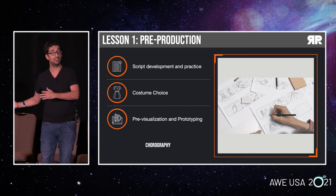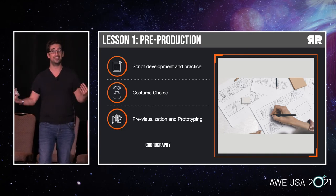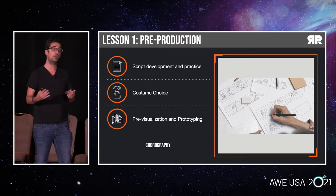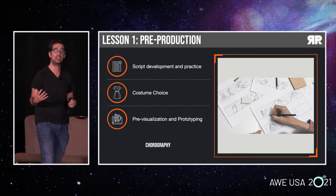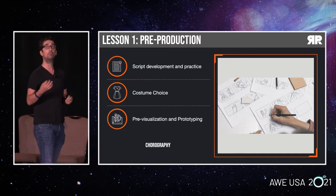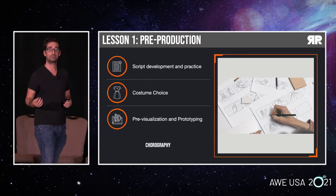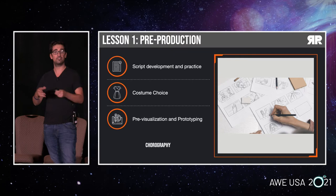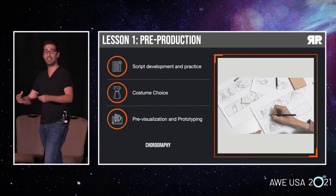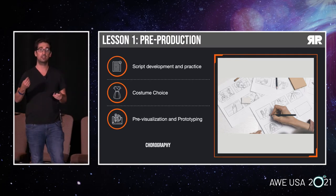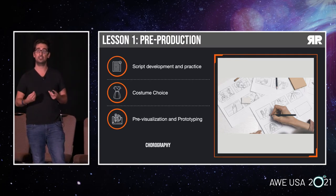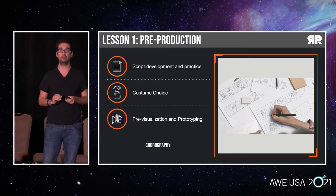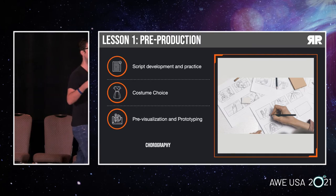If you're using a green screen, obviously you shouldn't have anything green on you. Also, anything that's transparent or reflective won't be picked up by the cameras. Our recommendation is to work with whoever you're partnering with for volumetric capture, making sure that the costume your actor will wear is going to work in the studio. We also recommend having a backup just in case the first one doesn't work.